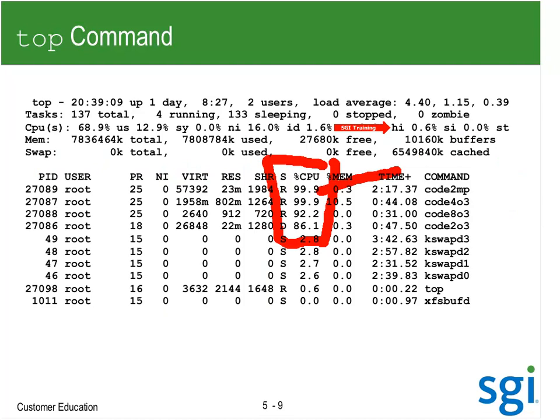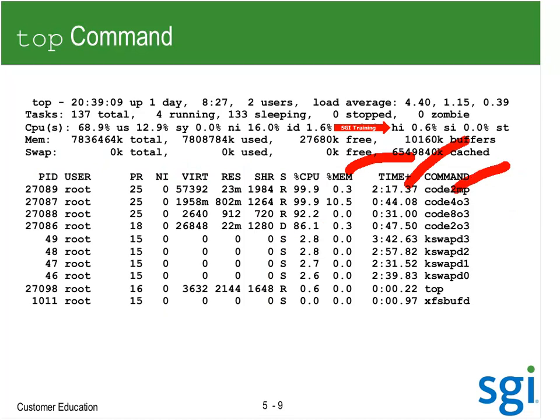That hog factor field is what top is sorted on by default. Then we've got percentage of memory being used, total user and system time, and the name of the process. I see some issues because I do have a swap daemon running — I am running out of memory, down to 27 meg. There is a sysctl parameter, vm.min_free_kbytes, that determines at what point kswapd comes in and starts trimming or recovering memory from the kernel and the page cache, then starts swapping.